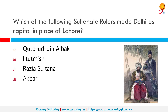Which of the following Sultanate rulers made Delhi the capital in place of Lahore? The correct answer is Iltutmish. Shamsuddin Iltutmish was the third ruler of the Mamluk or slave dynasty of Delhi, of Turkish origin. He was a slave of Qutubuddin Aybak and later became his son-in-law and close lieutenant, and it was he who shifted the capital from Lahore to Delhi.